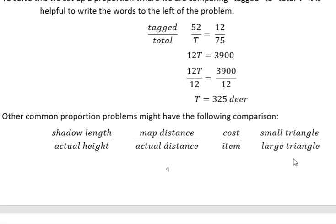Or you could be doing similar triangles. So small triangle compared to large triangle. Those are all things that you might have to compare in a problem. You would set them up the same way, making sure like we did in our problem, that tag goes all the way across the top and then the total goes all the way across the top. And that's how you can solve those problems.